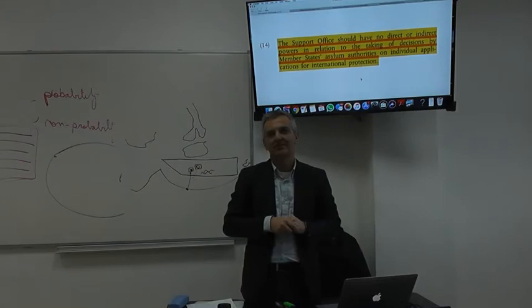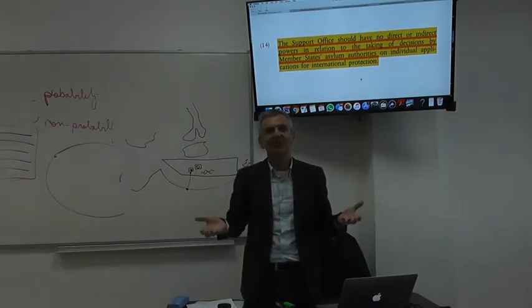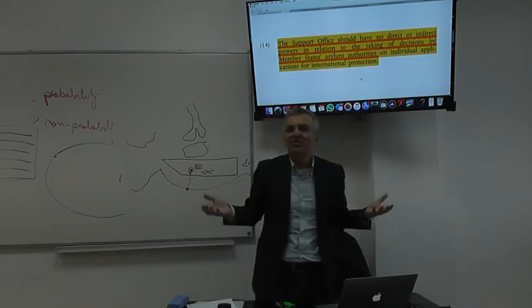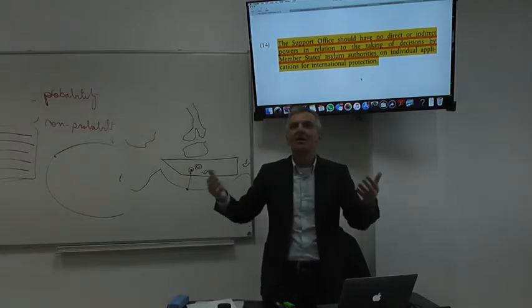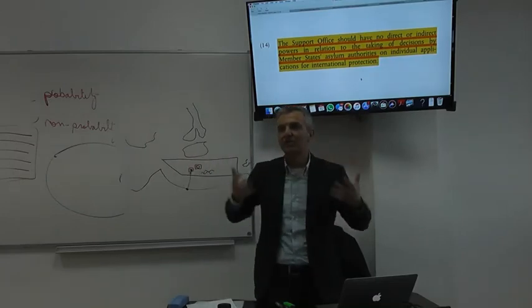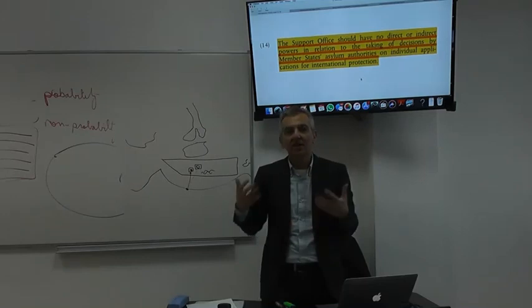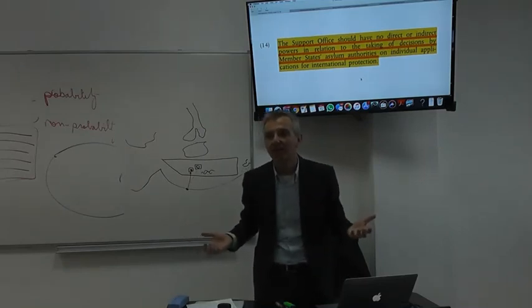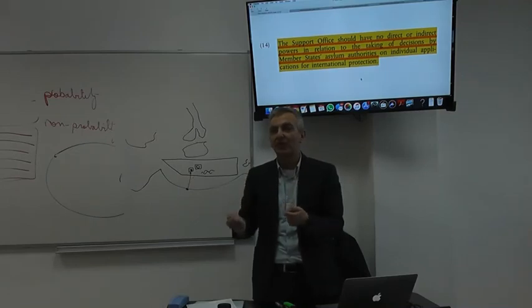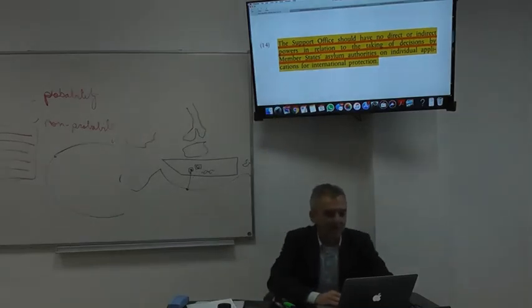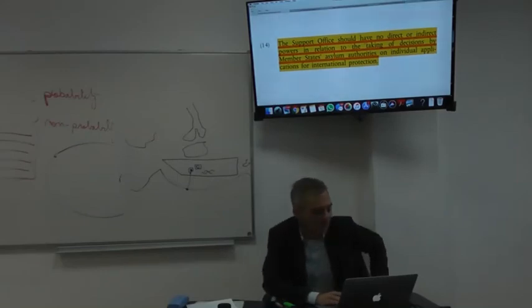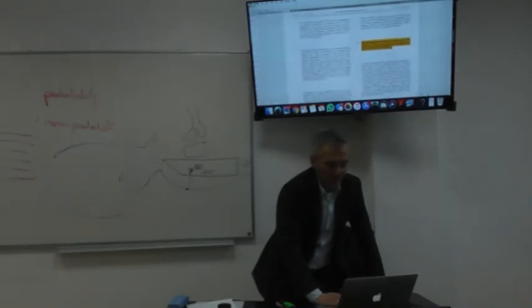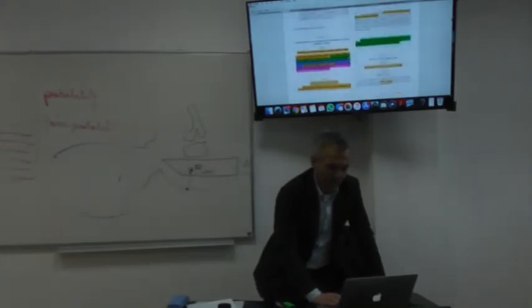Precisely. The EASO—they're making it clear, we're going to set up an office, but hey, the decision on whether to grant international protection remains in the hands of member states. Why do you think they wanted to include this reference? Because the member states are very jealous of this issue. We're talking about a very controversial and sensitive issue. How many foreigners come into the EU territory, come into our country, even if they apply for international protection. Who is going to decide whether they qualify for international protection or not?